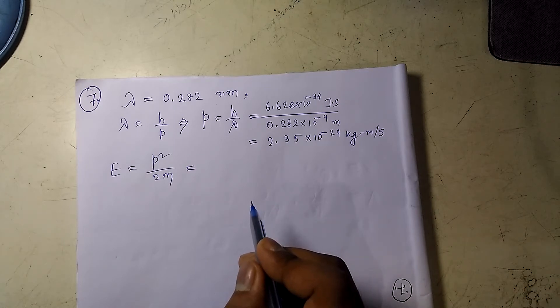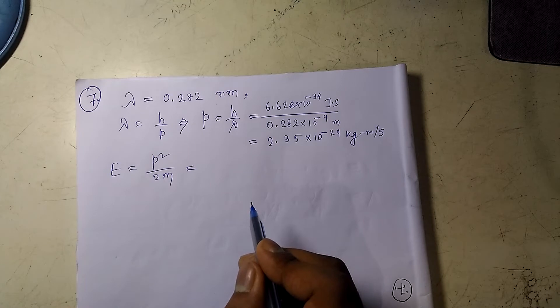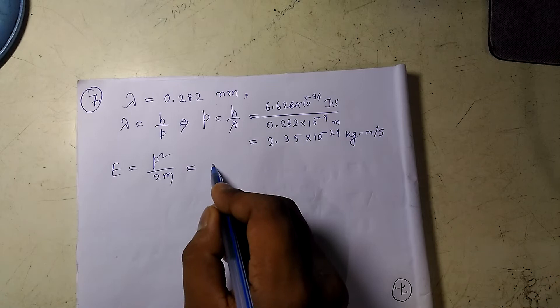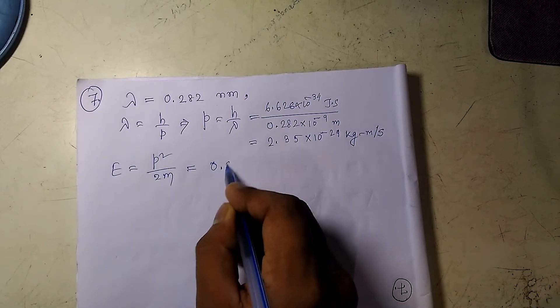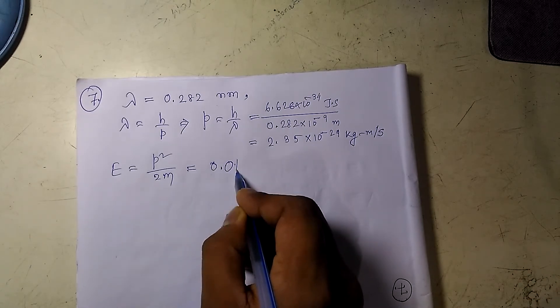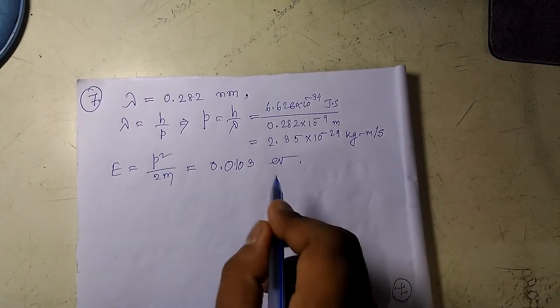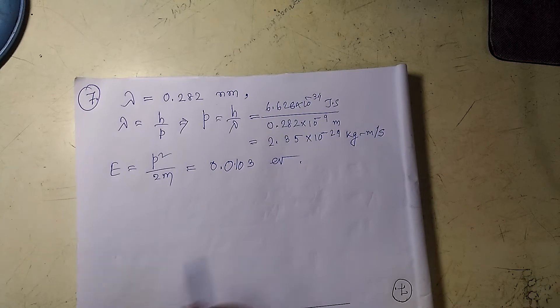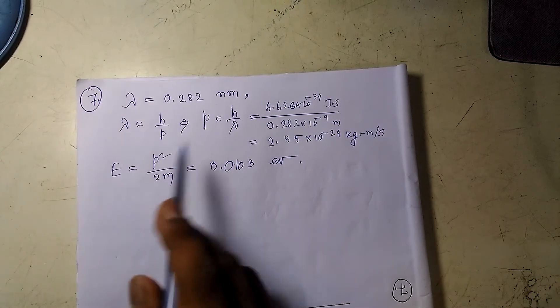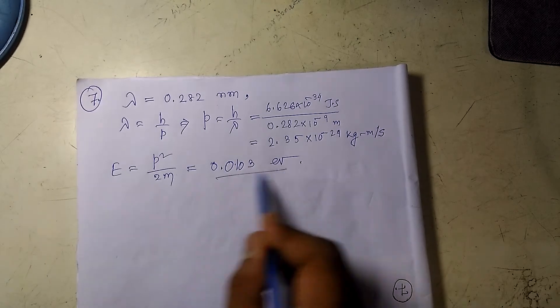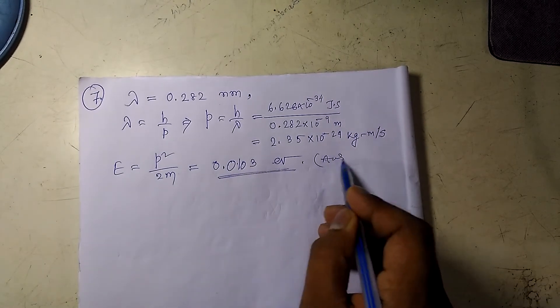We would get the value of E. So E would be just 0.0103 electron volt. Please put the value of P and mass of the neutron here to get the value of energy. This is the answer which is required.